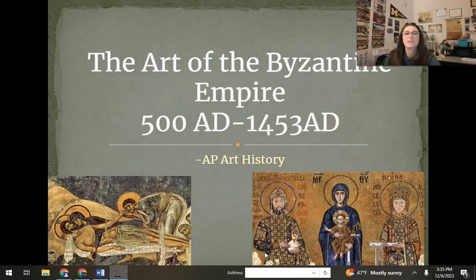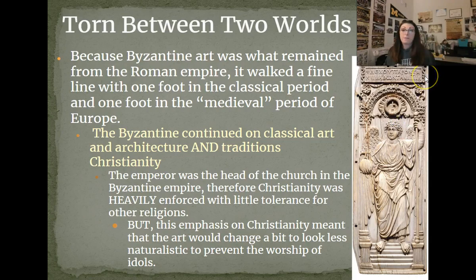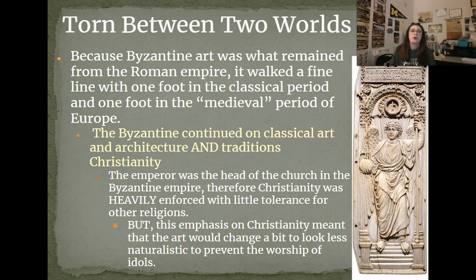Welcome to our first lecture of our final unit for the semester, where we're going to be learning about the art of the Byzantine Empire. Very important to understand context-wise: the Byzantine Empire is basically all that was left of the entire Roman Empire. If you cut the Roman Empire in half, the western half collapses and gets overrun by all kinds of different groups. The eastern half, located in Byzantium as their capital, remains and becomes what's called the New Rome. The people in the Byzantine Empire are still kind of stuck in that classical Roman past, which also includes a lot of Greek influence.